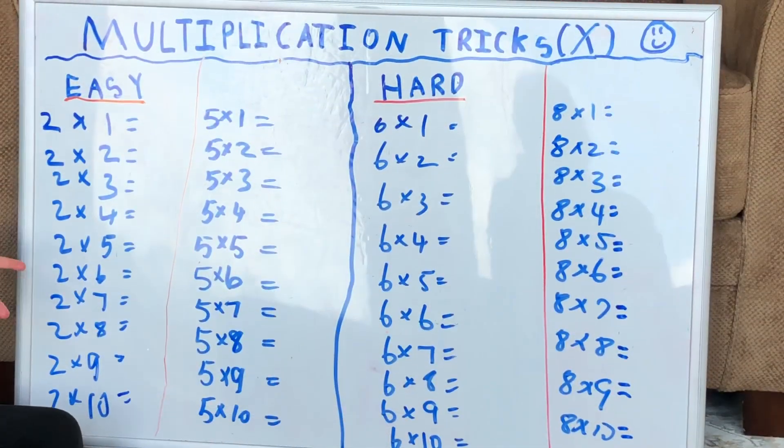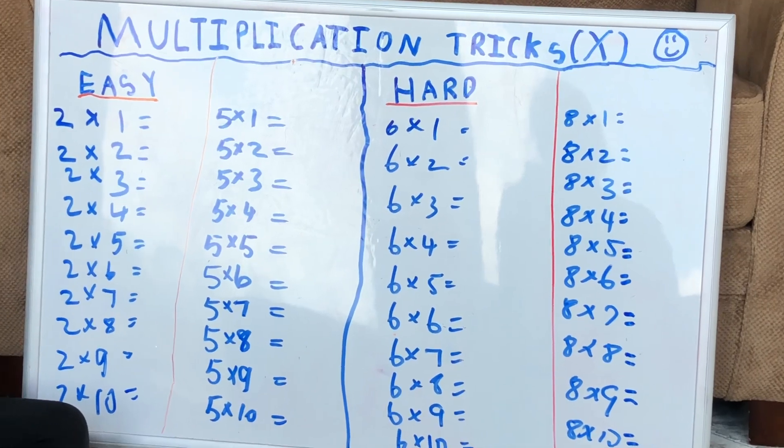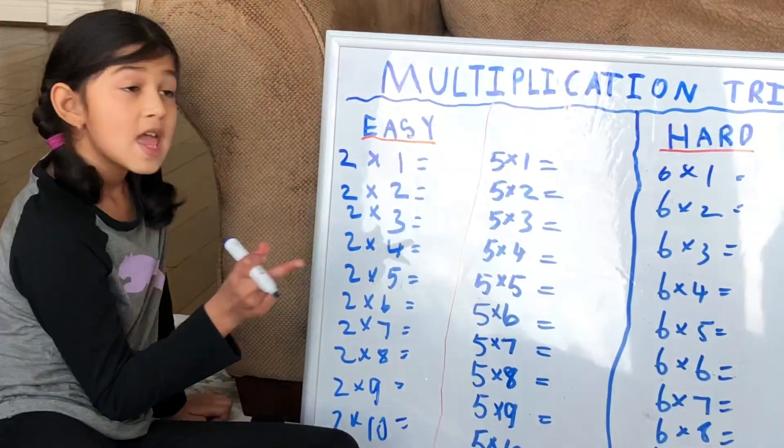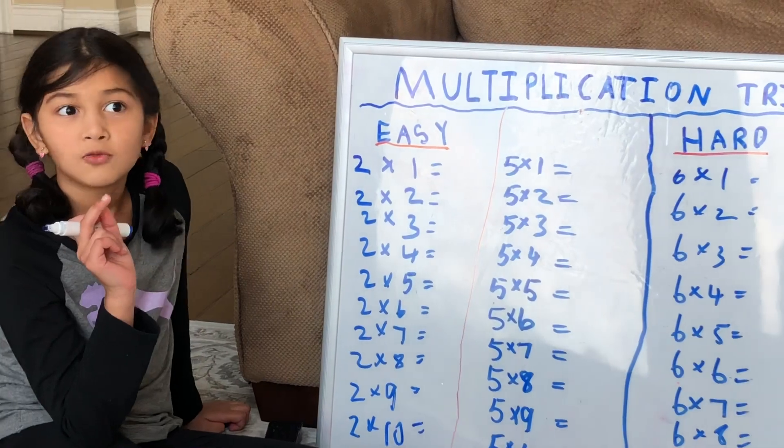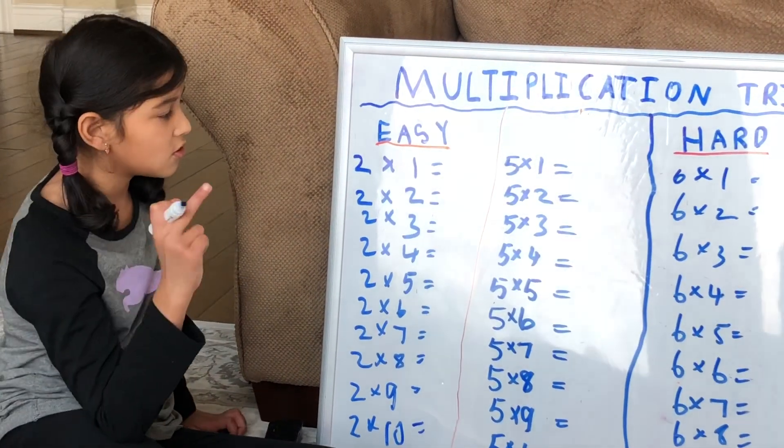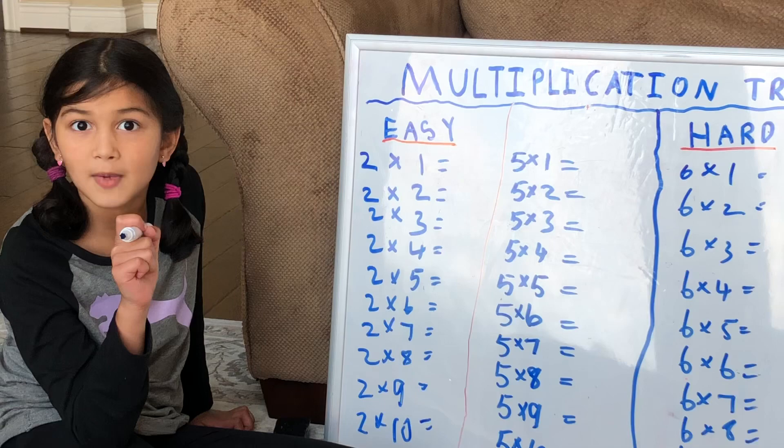Let's start with the 2s, which is very easy. Some of you may know, well most of you know: 2, 4, 6, 8, 10—counting by 2. That's exactly what you're going to do here.